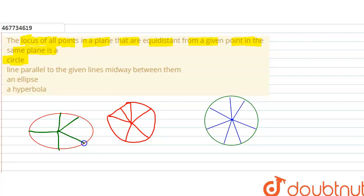So the circle will be the locus of points which are equidistant from a given point. So the answer will be circle. Okay, thank you friends.